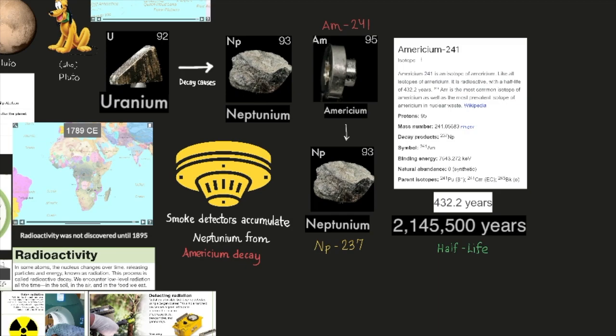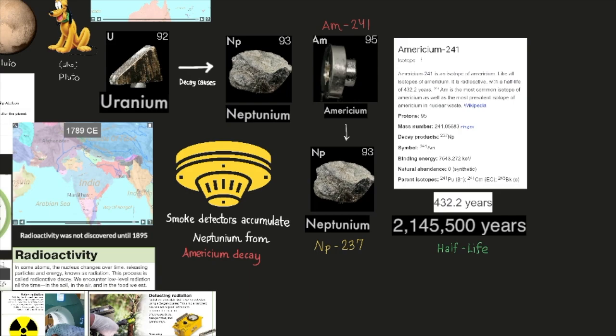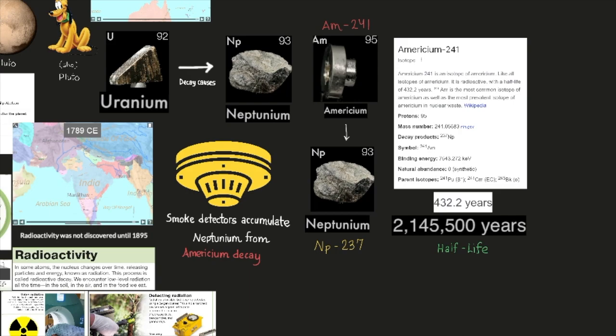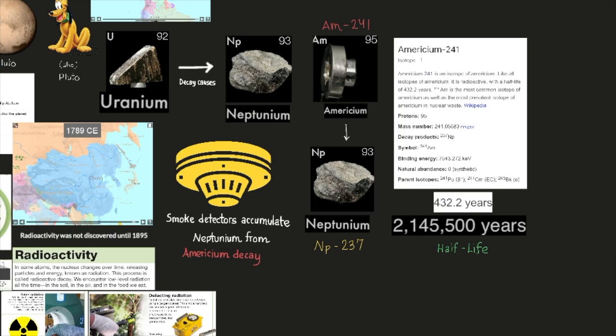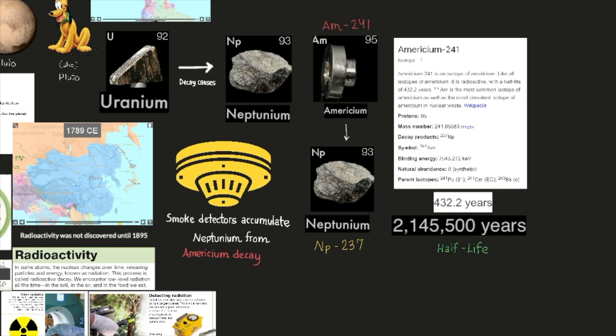There are no common applications for neptunium, but you almost certainly have some at home. The standard household smoke detector uses a tiny amount of americium, element number 95, to generate alpha particles whose interaction with smoke particles can be detected. The isotope of americium used, americium-241, has a half-life of 432 years.